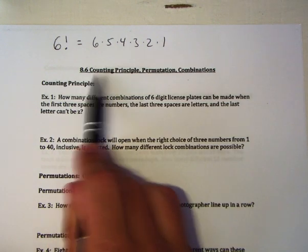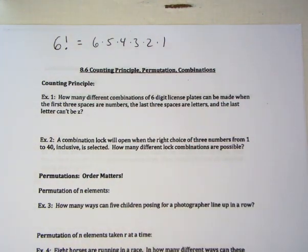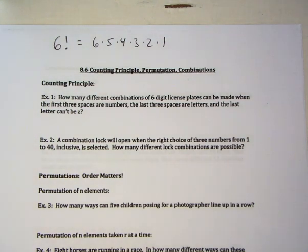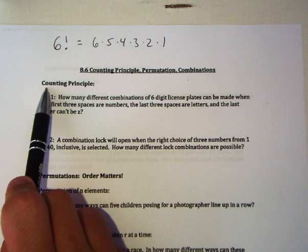So there are three things we're going to talk about today: counting principle, permutations, and combinations. What these three things do is find how many different ways you can do things. In probability, the bottom of your fraction is always the possible number of ways something can occur - and this is how we find that.